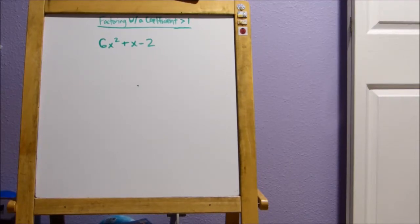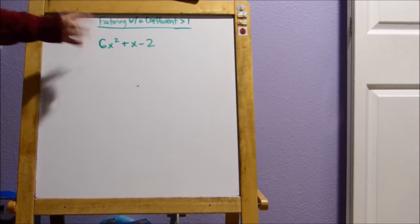Today we're going to talk about factoring with a coefficient greater than 1. So here we have 6x squared plus x minus 2. You can notice that the coefficient out front is greater than 1, 6.